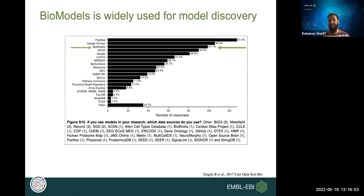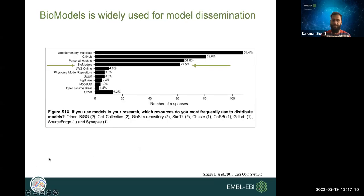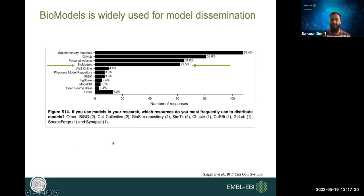BioModels is widely used for model discovery. Modelers often look for models in PubMed and Google Scholar, and then in BioModels — a major data resource for the modeling community. Many modelers also disseminate models through BioModels after supplementary material, GitHub, and personal websites. We are trying to promote submission to a common repository where models are easily findable instead of scattered across various resources.